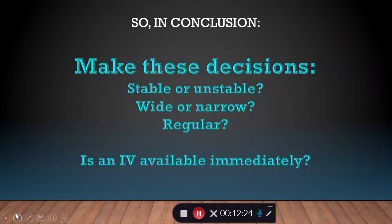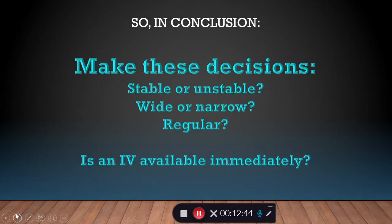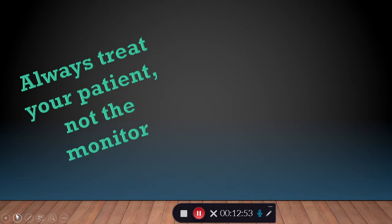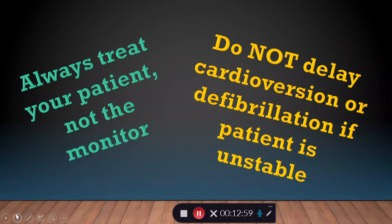In conclusion, we've got some decisions to make: Is my patient stable? Is my complex wide or narrow? Is my rhythm regular? And do I have an IV already available? Those are three simple decisions to come up with a really important treatment. Here are some pearls: always treat your patient and not your monitor. And never delay cardioversion or defibrillation in a patient that's unstable — they don't have the time, and we don't need to take it from them.